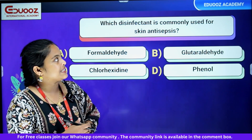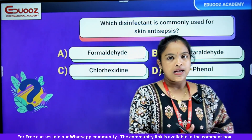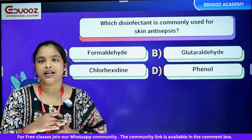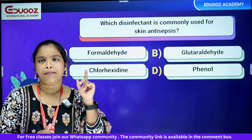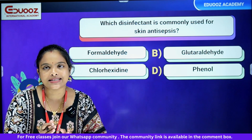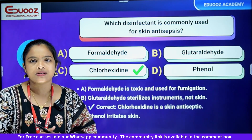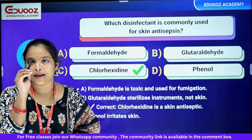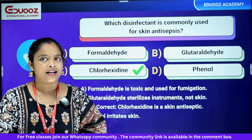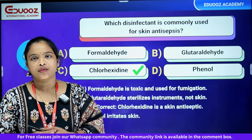Which disinfectant is commonly used for skin antisepsis? When we study disinfection, we study fumigation, room fumigation, surface cleaning, wound cleaning, and different concentrations. Options: formaldehyde, glutaraldehyde, chlorhexidine, phenol. The answer is chlorhexidine. Formaldehyde is toxic and used for fumigation. Glutaraldehyde is used to sterilize instruments at 2%. Phenols irritate the skin.